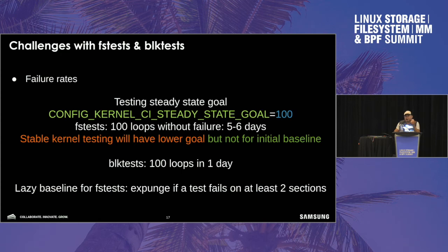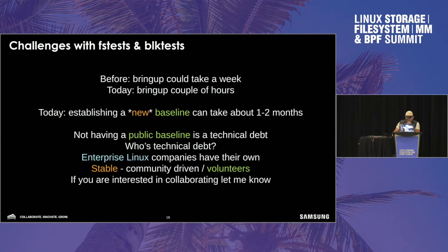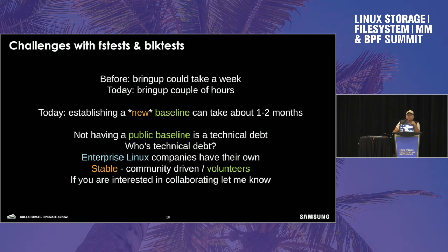It basically is a matter of managing what your priorities are, but it takes resources to properly do this. Establishing a new baseline for a new file system will take about one to two months. When you don't have a public baseline, consider it technical debt in the community. A lazy baseline means once you detect a failure in at least two types of configurations for the file system you're testing, you expunge it for all those sections and move on. You should eventually look into what happened, but reporting bugs is also 25% of the time — and it needs to be collaborative.